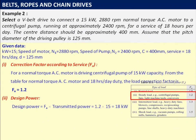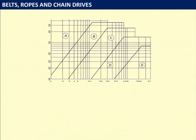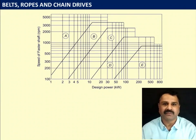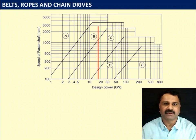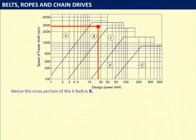Design power = FA × transmitted power = 1.2 × 15 = 18 kW. For design power 18 kW and speed 2880 rpm, using the graph of design power versus speed of faster shaft: drawing lines at 18 kW and 2880 rpm, the intersection lies in the zone of cross-section B. Hence the belt cross-section selected is B.